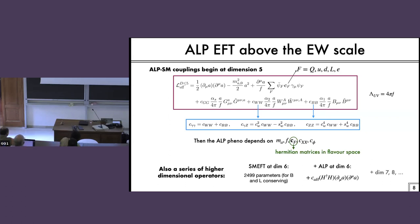You can write these as photons and Zs, but above the electroweak scale you have three couplings but only two underlying coefficients — C_WW and C_BB. So the couplings to photons and Zs are not all completely independent. With this effective field theory, the ALP phenomenology depends on just the parameters of this theory: the mass, which in general is free, the decay constant F, and each of these coefficients. In particular, the couplings to fermions are Hermitian matrices in flavor space, so in general you can have flavor-changing interactions.